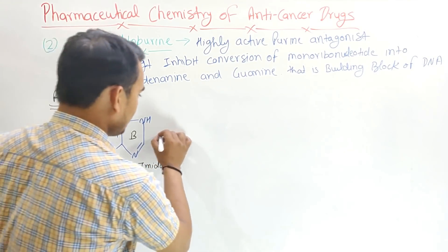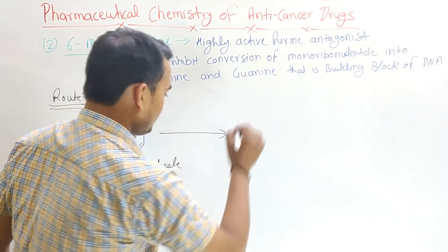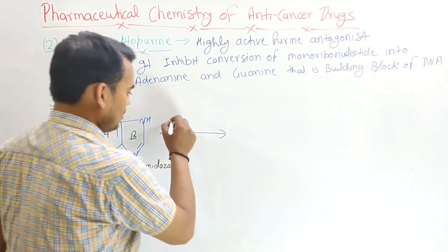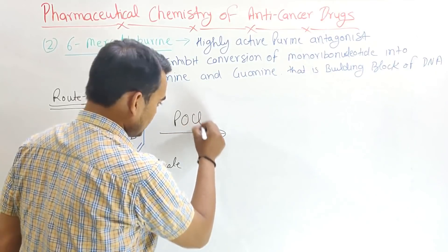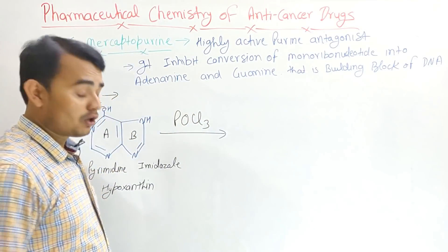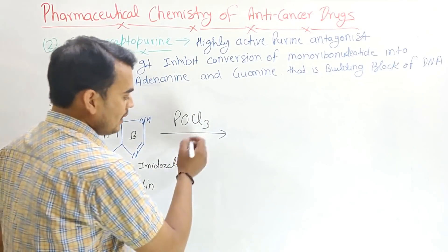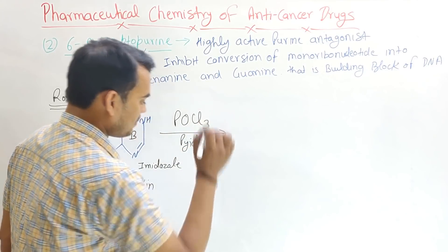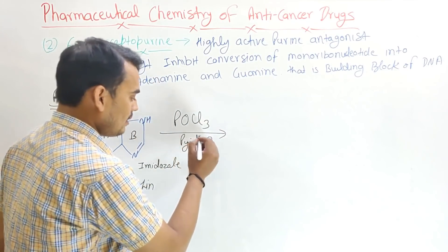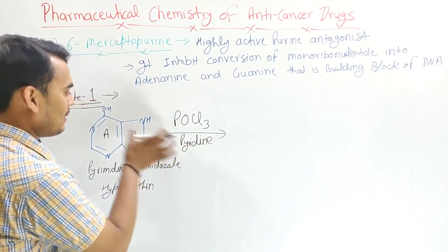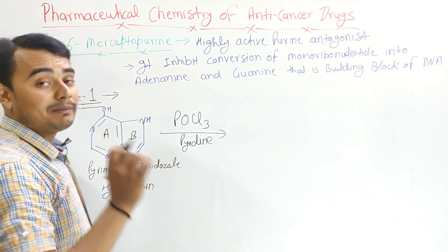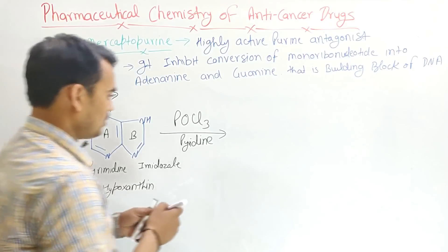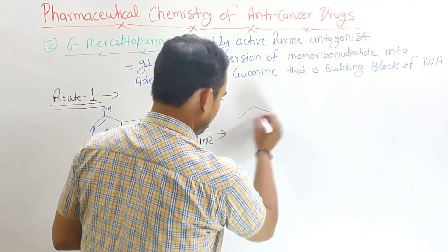This hypoxanthine, when reacted with phosphoryl chloride (POCl3) in the presence of pyridine, the hydroxyl group will be replaced by a chloride group, giving the next structure.